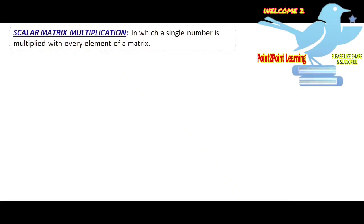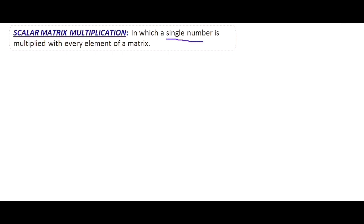Scalar multiplication is when a single number is multiplied with every element of a matrix. For example, if we have a matrix A: one, three, two, zero, one, five, three, two, one.